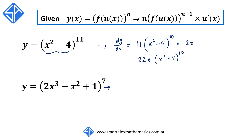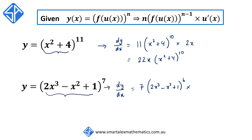Our fourth example: y is equal to 2x cubed minus x squared plus 1, all to the power of 7. The same idea — to differentiate this we're going to put the power 7 at the front, we're going to reduce the power of the original function by 1 so that becomes 6, and we're going to multiply by the derivative of what's inside the bracket, which is 6x squared minus 2x. So we can rearrange this: we get 7 times 6x squared minus 2x times 2x cubed minus x squared plus 1 all to the power of 6.